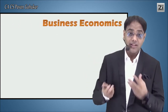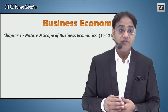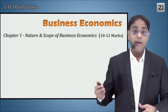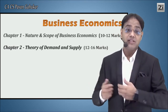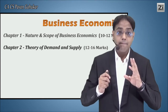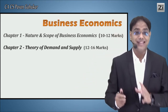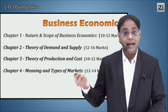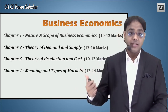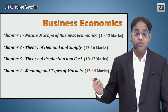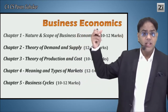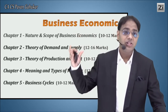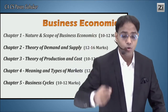Let's look at how many marks each chapter carries. Chapter 1, Nature and Scope of Business Economics, carries 10 to 12 marks. Chapter 2, Theory of Demand and Supply, carries 12 to 16 marks — it's a big chapter with more questions. Theory of Production and Cost carries 10 to 12 marks. Meaning and Types of Markets carries 12 to 14 marks. Business Cycles carries 10 to 12 marks. All chapters have roughly equal importance, but Theory of Demand and Supply and Types of Markets have slightly more questions.